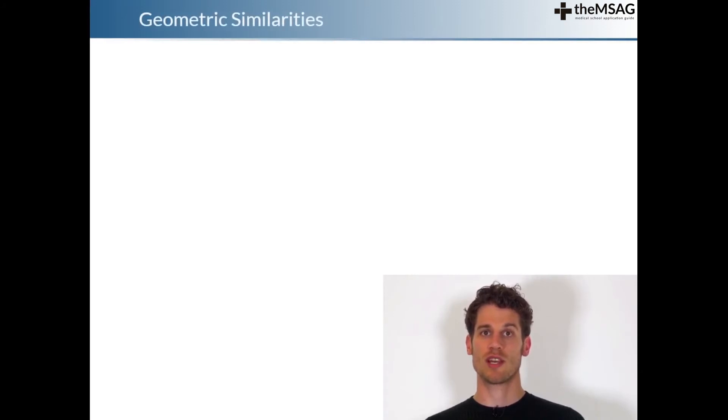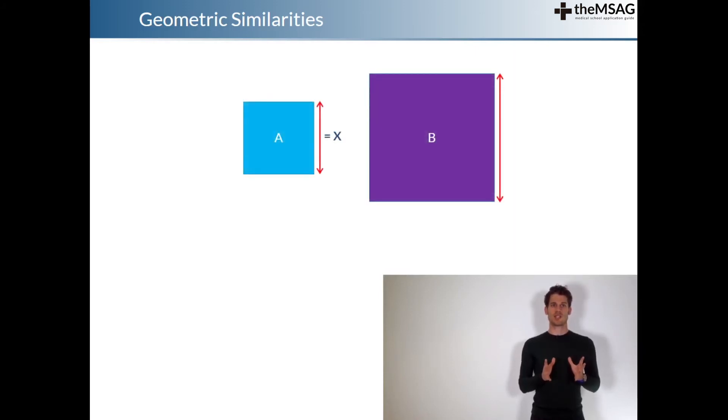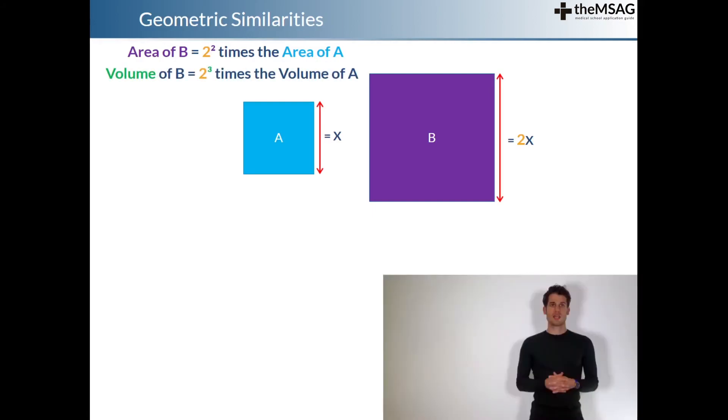Before we finish, let's take a quick moment to show a geometry trick that might just come in handy for UCAT's quantitative reasoning. Essentially, the trick is that if you have two similar shapes, i.e. the same angles, just a different size, and you know the length of the size of the bigger shape are 2 times the length of the size in the smaller shape, then the area of the larger shape will be 2 squared times as big, i.e. 4 times as big, and the volume will be 2 cubed times as big, so 8 times as big.